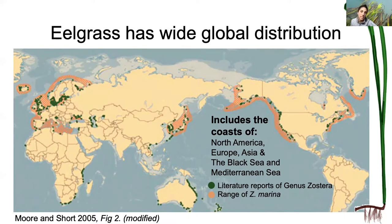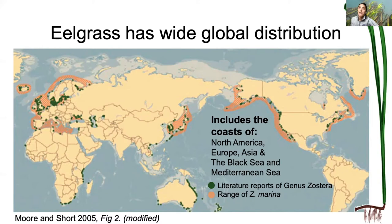Eelgrass, along with many other seagrass species, is considered a foundation species. That means seagrasses like eelgrass structure communities by alleviating stress and providing refuge. We talked about how eelgrass is restricted to shallow water environments because it needs so much light to photosynthesize. As a foundation species, one of the functions that eelgrass provides is improving water clarity and water quality, improving conditions that allow more light to reach deeper depths — actually improving conditions for itself.